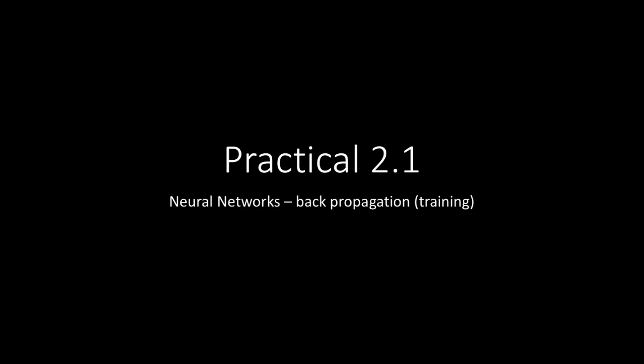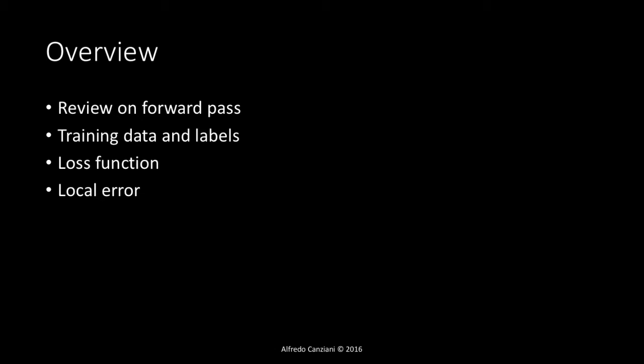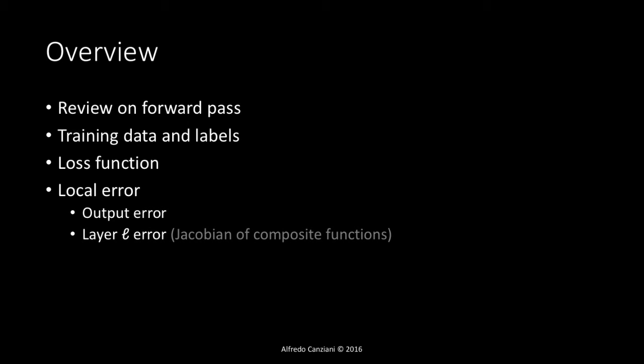In this video we will go through the derivation of the backpropagation algorithm. We will start with a review of forward propagation, then introduce training data and labels for a supervised training framework. The training will have as objective the minimization of a loss function. We will therefore introduce a local error through the network, starting by defining an output error, then generalizing the error to a nonspecific layer L. We will also briefly review how to compute the Jacobian of the composite of functions, and finally see how to compute the parameter gradients and review the equations for the backpropagation algorithm.